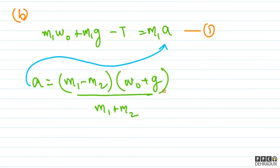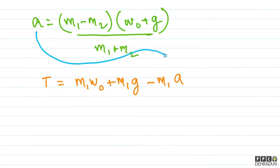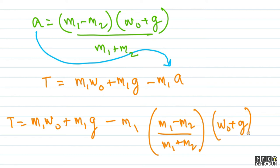To find the tension, let's use equation number 1: T = m1·w0 + m1·g − m1·a. Now we substitute the value of a = (m1 − m2)/(m1 + m2) × (w0 + g) into this expression.